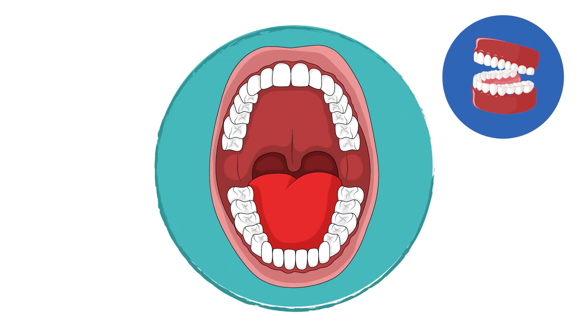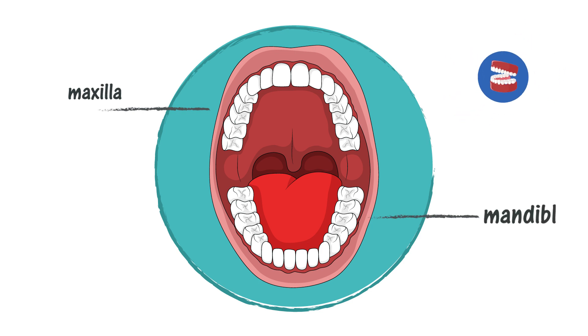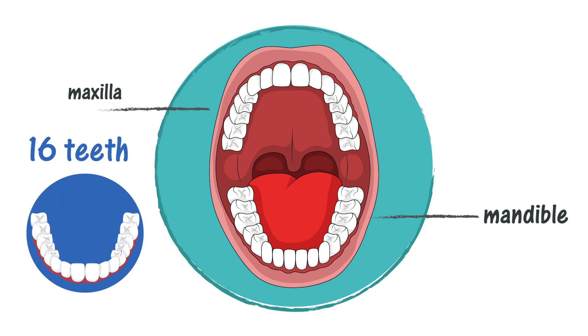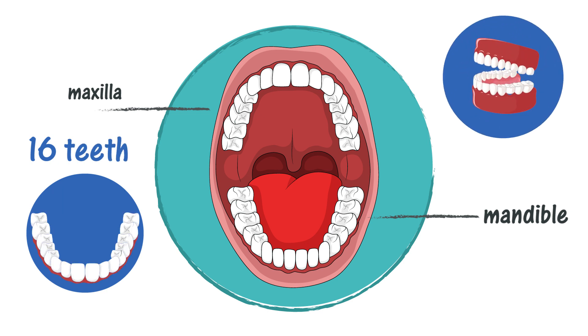The upper teeth are housed in the maxilla, and the lower teeth are housed in the mandible. In adults, there are generally 16 teeth in the mandible and 16 teeth in the maxilla.